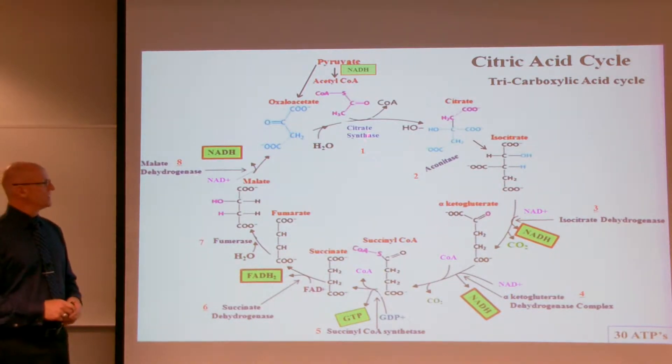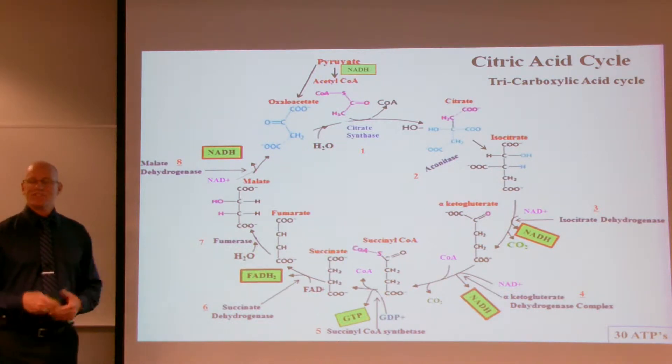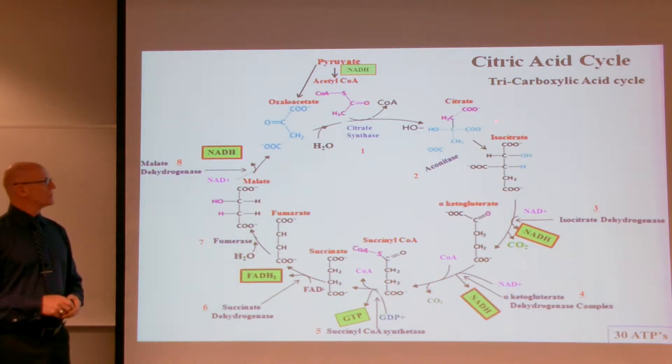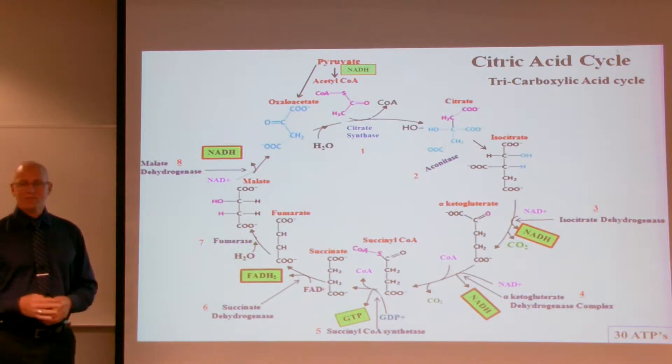So the first step, citrate synthase, will help transfer two of the carbons from acetyl-CoA onto the 4-carbon molecule, oxaloacetate. By losing a coenzyme A, it is converted to citrate. And citrate is acidic because it has three carboxyl groups on it, which is where we get two of its names, the citric acid cycle or the tricarboxylic acid cycle.